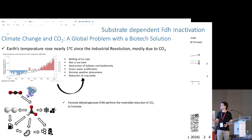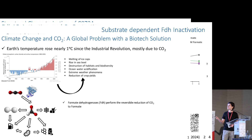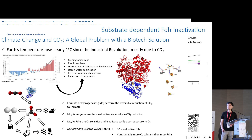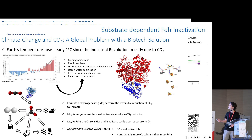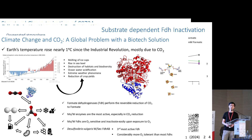Everybody knows about CO2 problems, so I'll not waste any more time with that. But the key thing is that formate dehydrogenases can be used to convert CO2 to formate, which would then be used for multiple purposes and could help fight climate change. This enzyme is a metal enzyme which contains a tungsten center and four iron-sulfur clusters. It's particularly active when compared with other FDHs and also quite sensitive to oxygen.